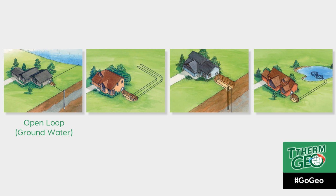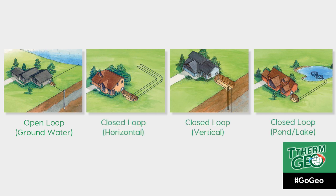For closed-loop systems, the options are to have a horizontal, vertical, or pond-lake loop system. The site will typically dictate which system is the best for the project to provide the best solution for heating and cooling your commercial or residential property.